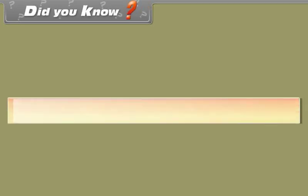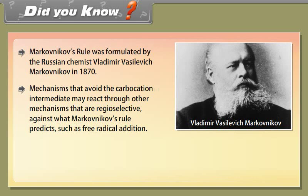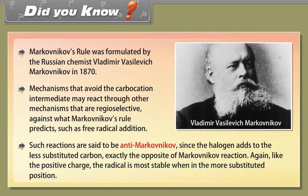Did you know? Markovnikov's rule was formulated by the Russian chemist Vladimir Vasilevich Markovnikov in 1870. Mechanisms that avoid the carbocation intermediate may react through other mechanisms that are regioselective against what Markovnikov's rule predicts, such as free radical addition. Such reactions are said to be anti-Markovnikov, since the halogen adds to the less substituted carbon — exactly the opposite of the Markovnikov reaction. The radical is most stable when in the more substituted position.